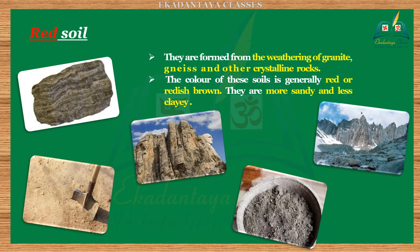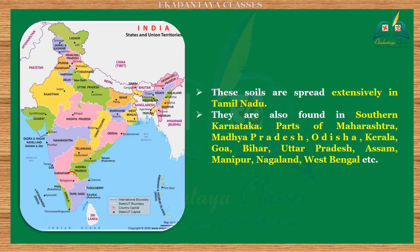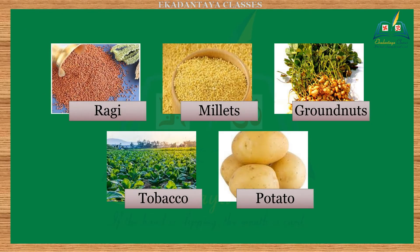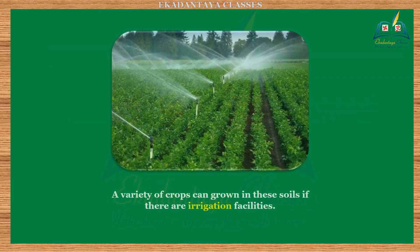Three: red soils. They are formed from the weathering of granite, gneiss, and other crystalline rocks. The color of these soils is generally red or reddish-brown. They are more sandy and less clayey, so they do not retain moisture well. They cover a vast area of about 5.2 lakh square kilometers. These soils are spread extensively in Tamil Nadu and are also found in southern Karnataka, parts of Maharashtra, Madhya Pradesh, Odisha, Kerala, Goa, Bihar, Uttar Pradesh, Assam, Manipur, Nagaland, and West Bengal. Red soils are ideal for the cultivation of ragi, millets, groundnuts, tobacco, and potato. A variety of crops can be grown in these soils if irrigation facilities are available.